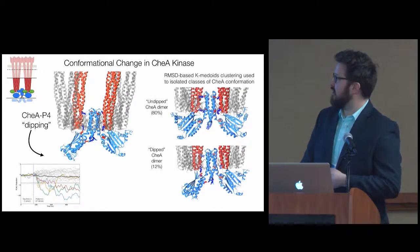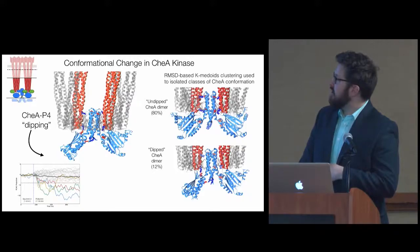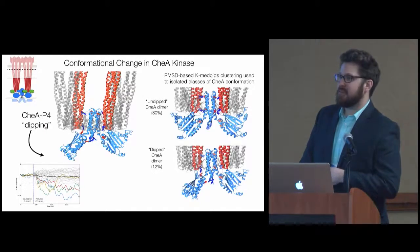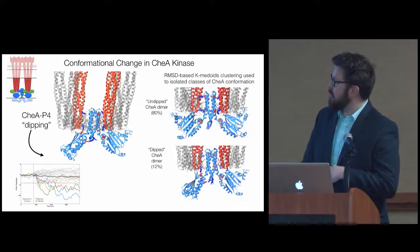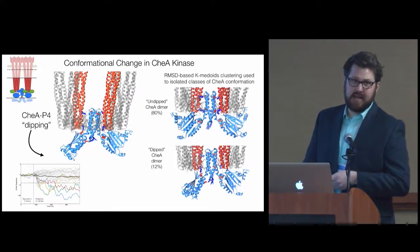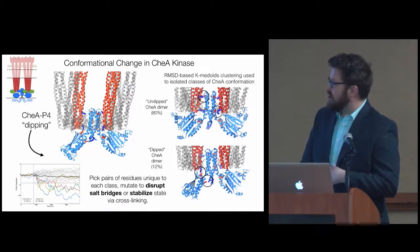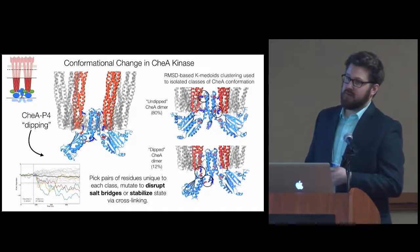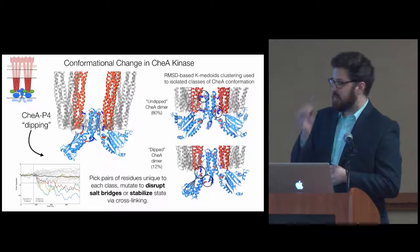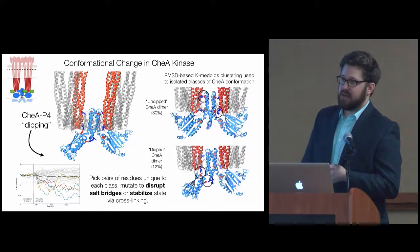So we asked what was different about these simulations. We used RMSD-based k-medoids clustering to basically assign the conformations of these various kinases to classes. We came up with four classes. Two of them were dominated by this undipped CheA dimer, which we obtained from the MDFF. But this other separate class was well-occupied, which we called the dipped CheA dimer. The strategy here was basically then to pick pairs of residues that were unique to either class, so we could potentially disrupt salt bridges or stabilize via cross-linking the different classes of structures.